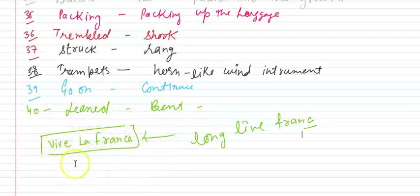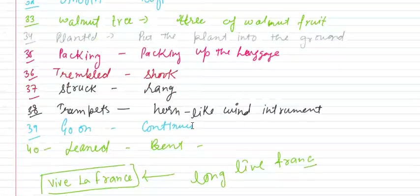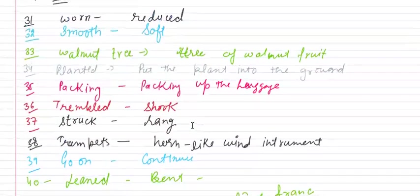Aur ek yeh France ka little word hai, sentence hai. Vive la France. This is long live France ki, jo France hai woh amar rahe. So I hope ki aap ko yeh words thik lage hon, achhe lage hon. Aur amar rahe words thik samajh aaye hon.